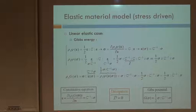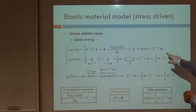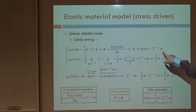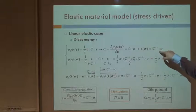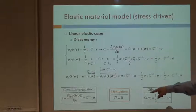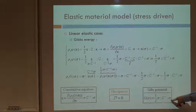Finally, by derivation, by differentiation, we obtain that the strains are C minus 1 times sigma, which is the way I just found in the strain-driven model. The dissipation is zero, and the Gibbs potential is J.